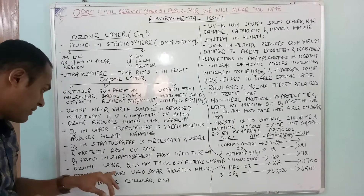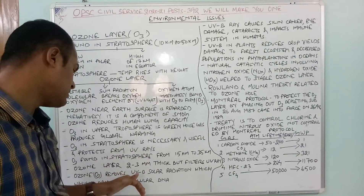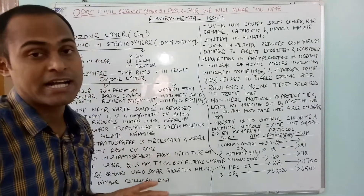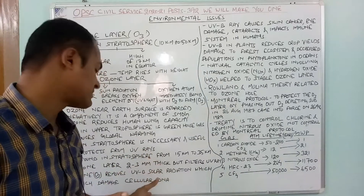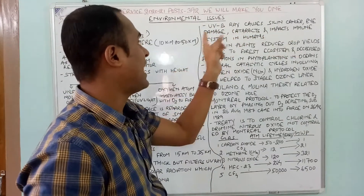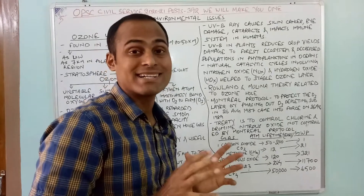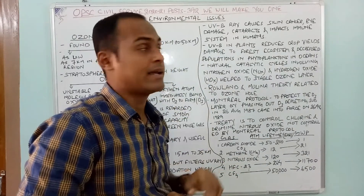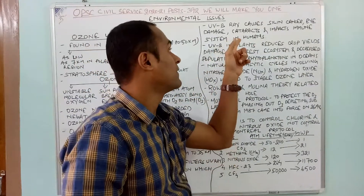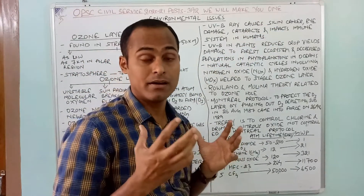Ozone removes ultraviolet-B solar radiation, which can damage cellular DNA. Ultraviolet-B rays cause skin cancer, eye damage, cataract, and impact the immune system in humans. If ultraviolet-B radiation reaches Earth, it will cause skin cancer, eye damage, cataract, and disturbance in the immune system.